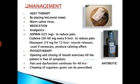Management of trismus includes heat therapy by placing hot moist water or a moist towel on the affected area, and warm saline rinses. Medications include analgesics: aspirin 325 mg to reduce pain, codeine 30–60 mg every 6 hours to reduce pain, and diazepam 10 mg every 12 hours as a muscle relaxant to produce a calming effect if necessary. Physiotherapy involves opening and closing of mouth exercises until the patient is symptom-free. If pain and dysfunction continue for 48 hours, administer antibiotics. Chewing sugarless gum can also be prescribed.